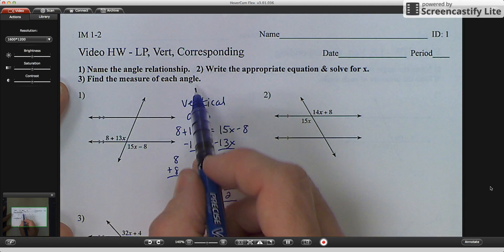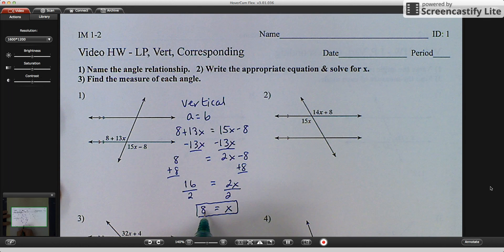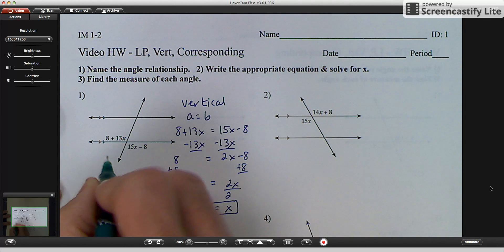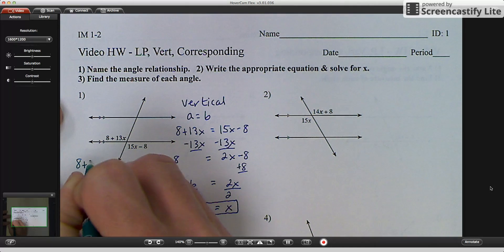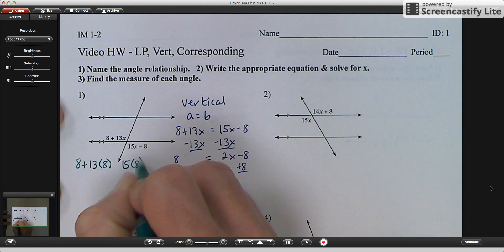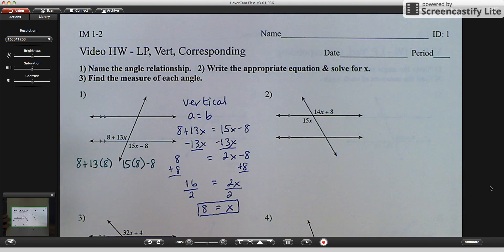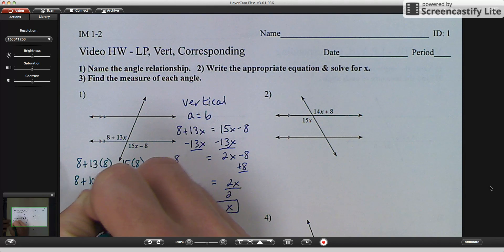So that's part 2. The third part says find the measure of each angle. So the way you're going to find the measure of each angle, I'm going to change colors, is I'm going to come over here and I'm going to substitute my x value in to each angle. Now they're congruent, so they should equal each other when I do it. So I have 8 plus 13 times 8, and I have 15 times 8 minus 8. I need a calculator because I don't know my 8's multiplication very well. 13 times 8 equals 104. So I have 8 plus 104. 8 plus 104 would be 112 degrees.